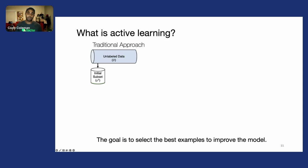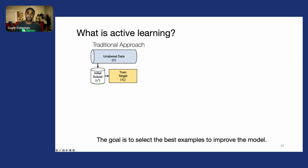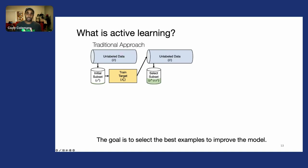That subset is either chosen at random or given to us, and we train a model on it. This is where the interesting bit happens: we take that model and a selection strategy to quantify the informativeness of examples, and we apply that to all of the unlabeled data.